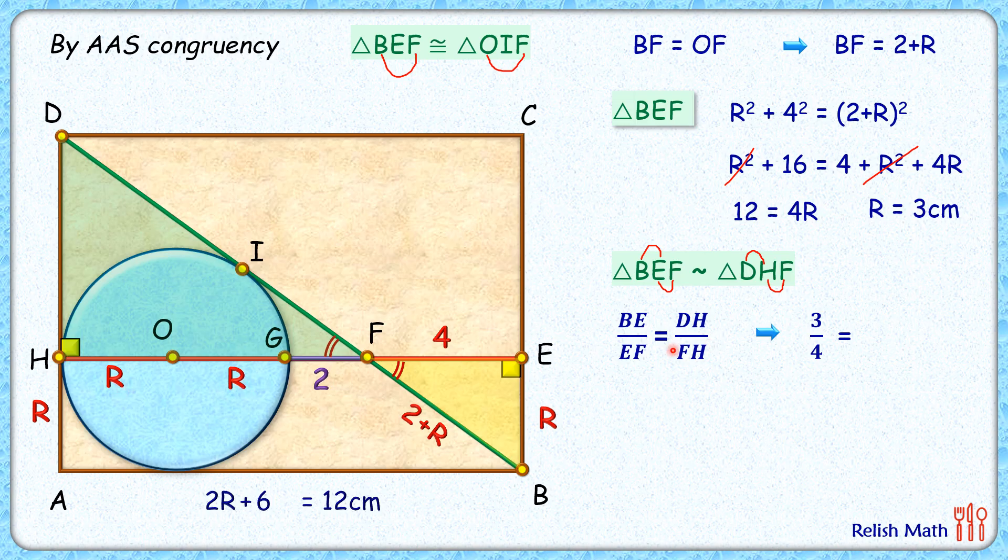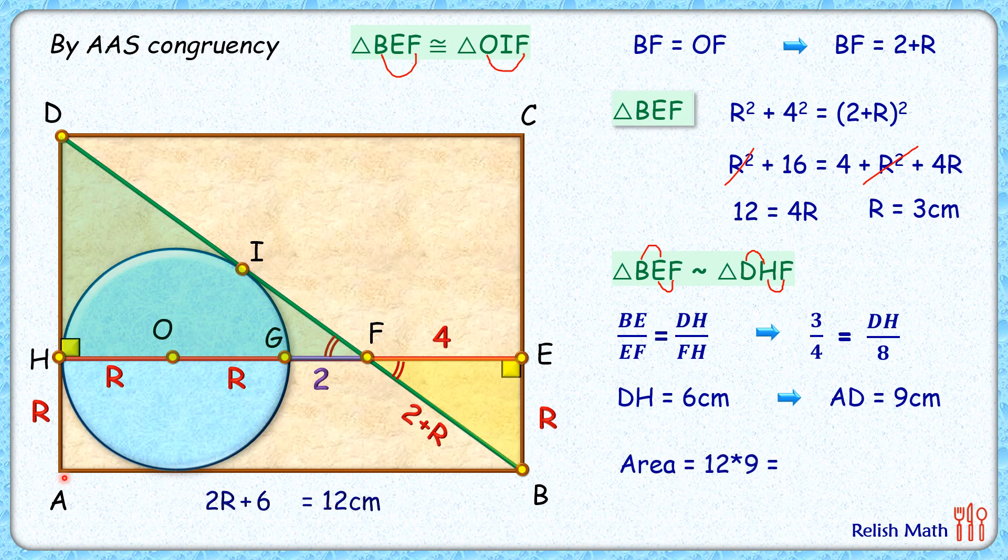So DH upon 8, simplifying it will get value of DH as 6 centimeters, or the height of this triangle is 3 plus 6, or 9 centimeters. And the area of triangle, that's length times breadth, that is 108 centimeter square, and that's our answer.